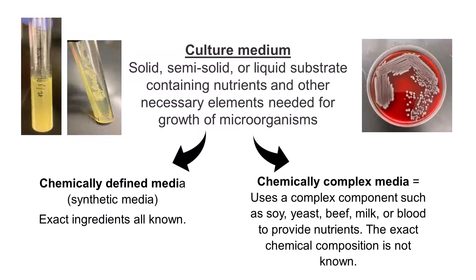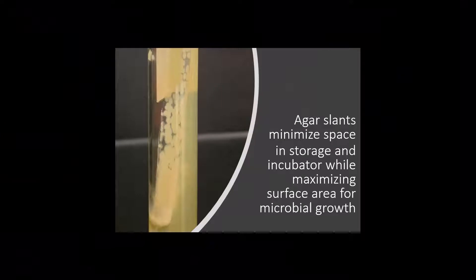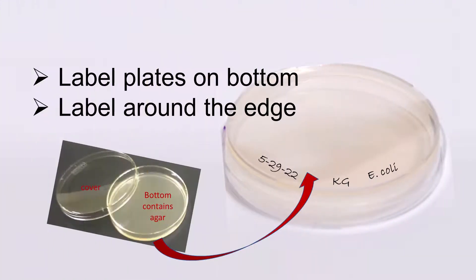Broth cultures are usually in tubes or flasks. Solid media is usually in Petri dishes, plates, or tubes. The advantage of tubes is that they conserve space, but you still want to maximize surface area for growth, so these tubes are slanted while the agar cools — hence they're called slants.